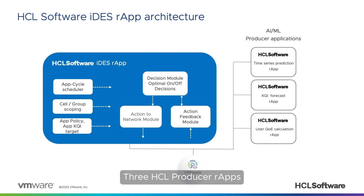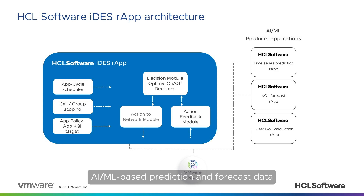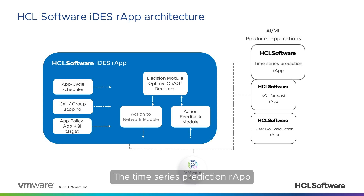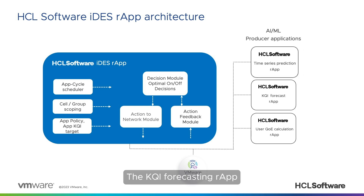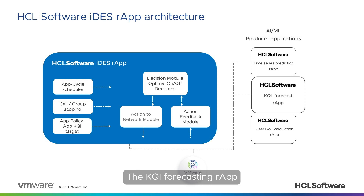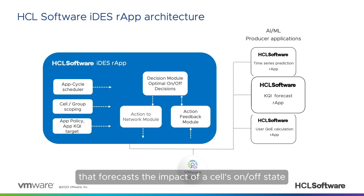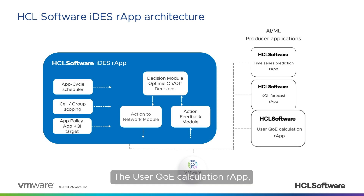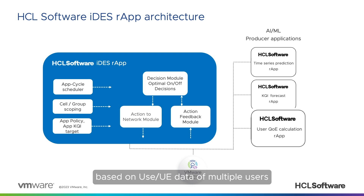Three HCL Producer R-Apps support IDES by providing AIML-based prediction and forecast data: the Time Series Prediction R-App that predicts future values of metrics and KPIs; the KQI Forecasting R-App that forecasts the impact of a cell's on-off state on meeting the target KQI; and the User QoE Calculation R-App that calculates users' quality of experience based on UE data of multiple users.